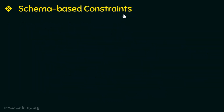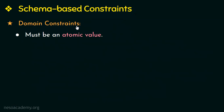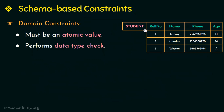The first constraint under schema-based constraints is domain constraints. Domain constraints specify that within each tuple, the value of each attribute has to be atomic or indivisible. Also, this constraint checks the data type of the values of each attribute. For example, in the relation student, if the data type of the attribute age is assigned as int, then we can't have any values in that column other than the int data type. So this relation violates domain constraint because we have a value in the age column which is not of int data type.